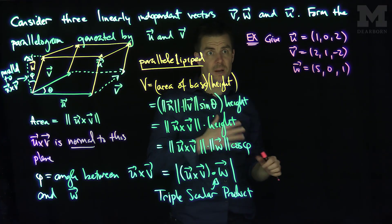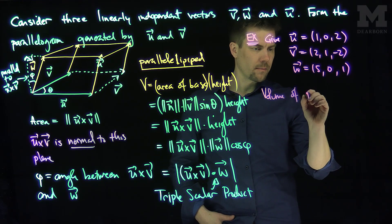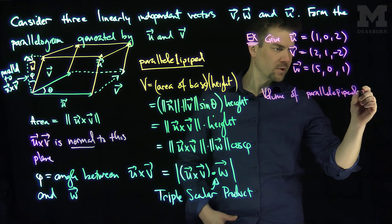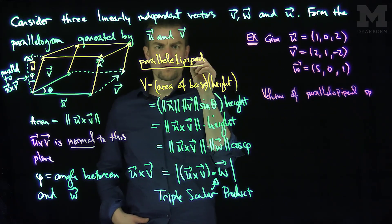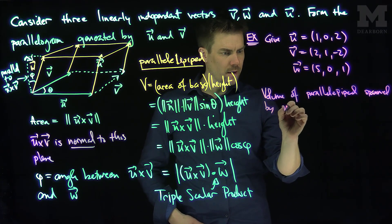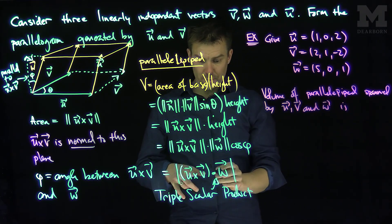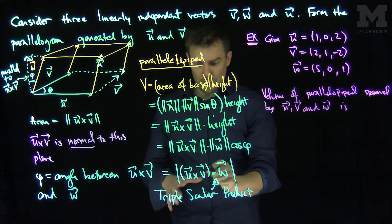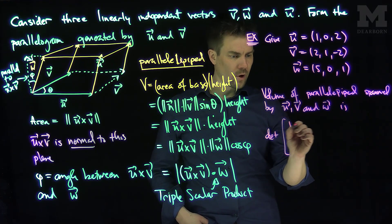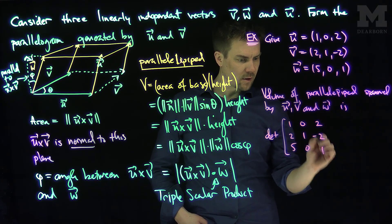So the volume of the parallelepiped spanned by these vectors, the volume of the parallelepiped spanned by u, v, and w, is going to be the triple scalar product, which is the determinant. So we can compute this triple scalar product by computing a determinant. So this is going to be the determinant of this matrix: 1, 0, 2; 2, 1, negative 2; and 5, 0, 1.